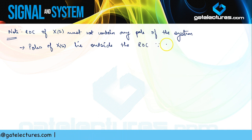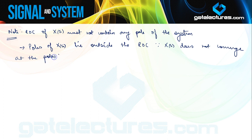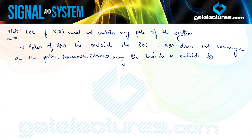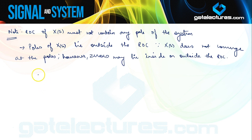Zeros are not going to make any difference, so zeros may lie inside or outside the ROC. We can specify any Laplace transform X(s) completely using just the location of its poles and zeros, and its ROC can also be specified. We use a cross to represent a pole in the s-plane and a circle to represent a zero in the s-plane. We are going to look at this by an example.